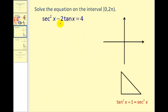Here we have secant squared x minus two tan x equals four. Well, we can replace secant squared x with tan squared x plus one. Let's go ahead and do that.